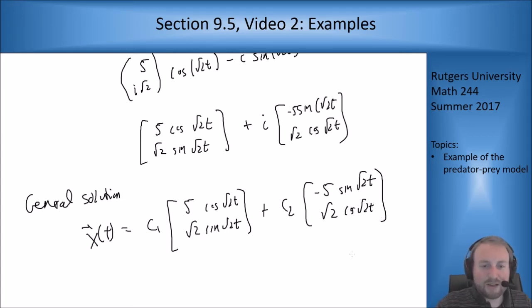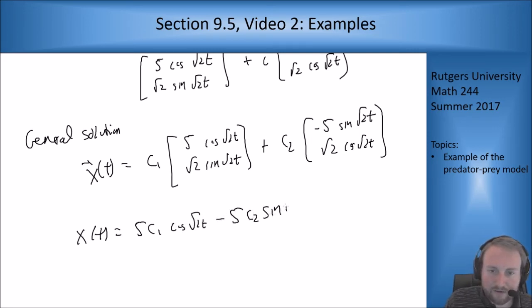What this means is my population of prey x(t) is going to be 5 c1 cosine of root 2t minus 5 c2 sine of root 2t. And my predator population is going to be root 2 c1 sine of root 2t plus root 2 c2 cosine of root 2t.